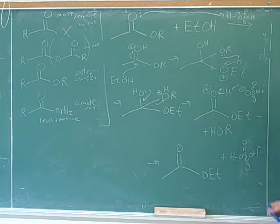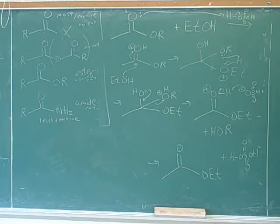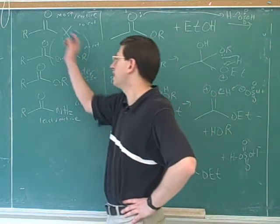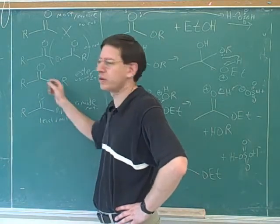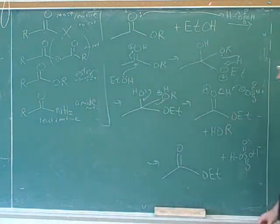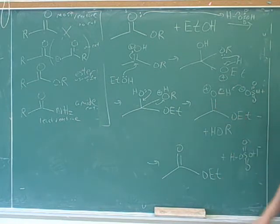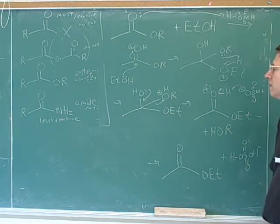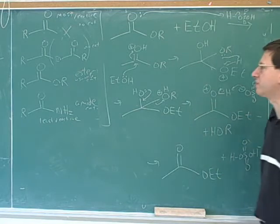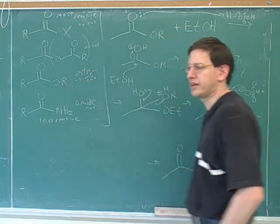What type of functional group did we start with here? An ester. That's right. And what type of functional group did we end up with? An ester. That's right. So this was a case where instead of moving up or down in the table, we moved horizontally — from one ester to another. This is an important type of reaction called transesterification, because it's going across from one ester to another ester. But more important than the name is understanding that the reaction fits into our general format.